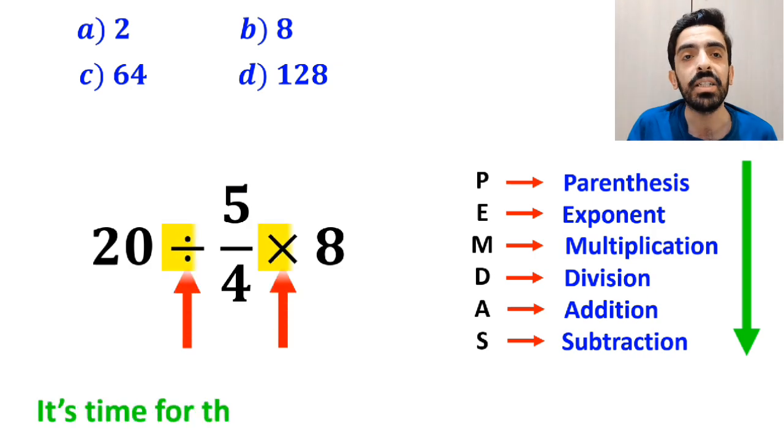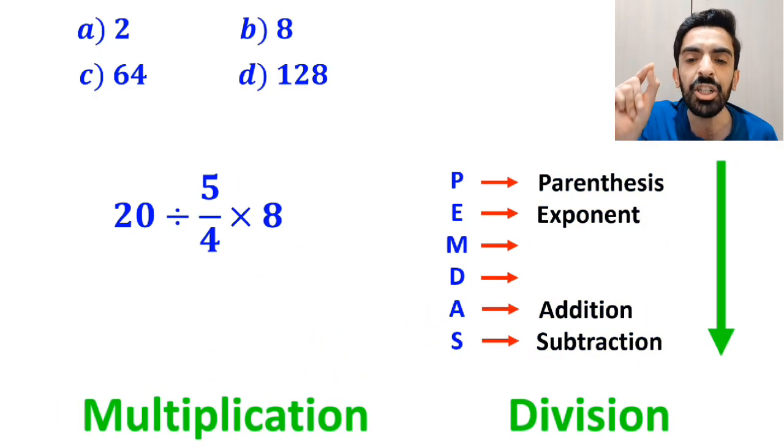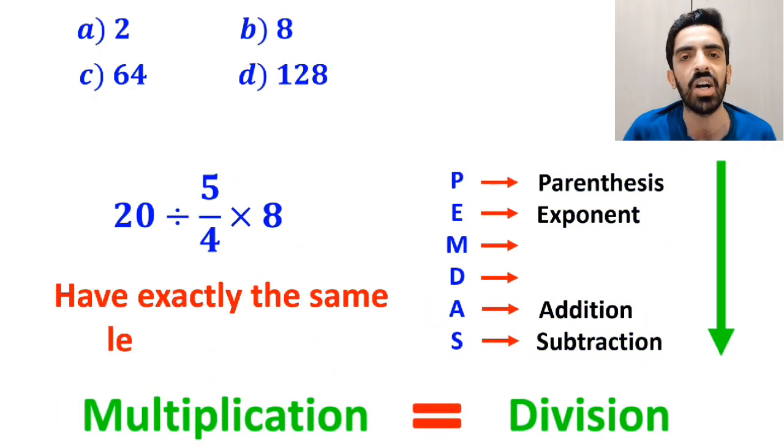Alright, now it's time for the division and multiplication. However, it's very important to note that, according to the PEMDAS rule, multiplication and division have exactly the same level of priority.